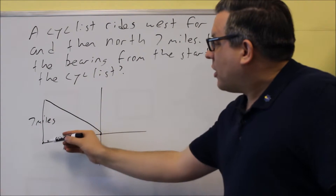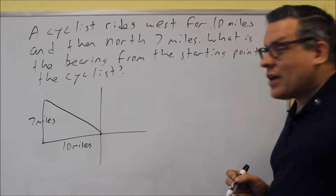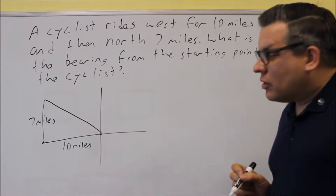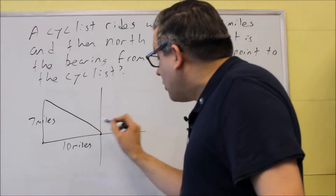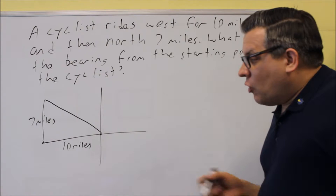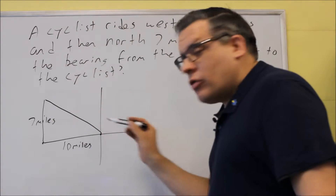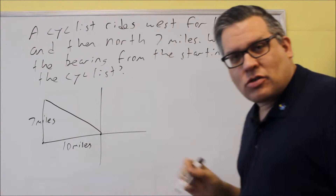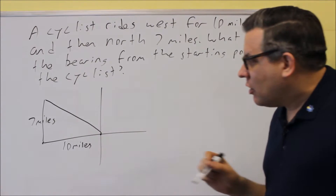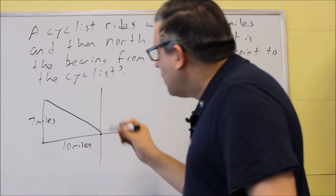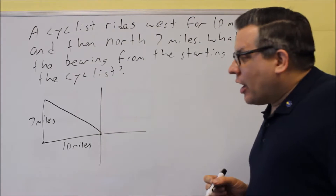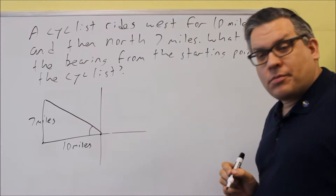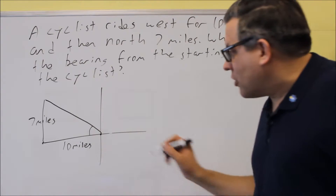West 10 miles and north 7 miles — we're asking for what is the bearing from the starting point to the cyclist. We want the bearing, which means we need to figure out what the angle is. We know the direction is going to be north and west, so we'll have that as part of our answer, but we want to know what the angle is. I can find the angle inside the triangle by setting up a trig function.